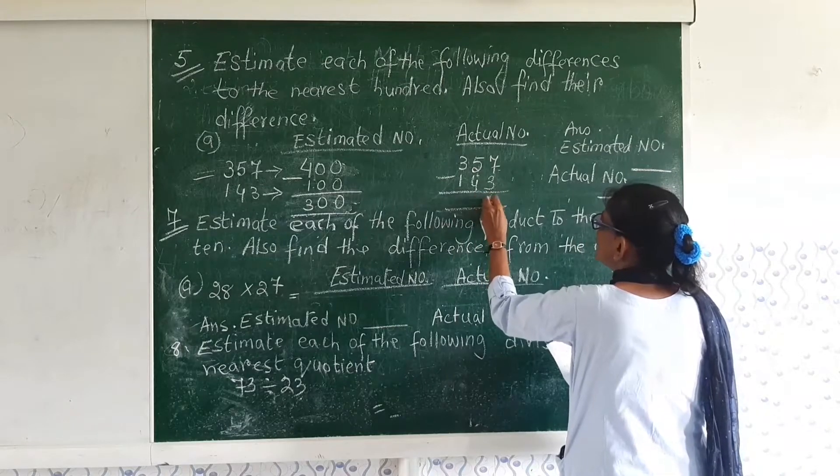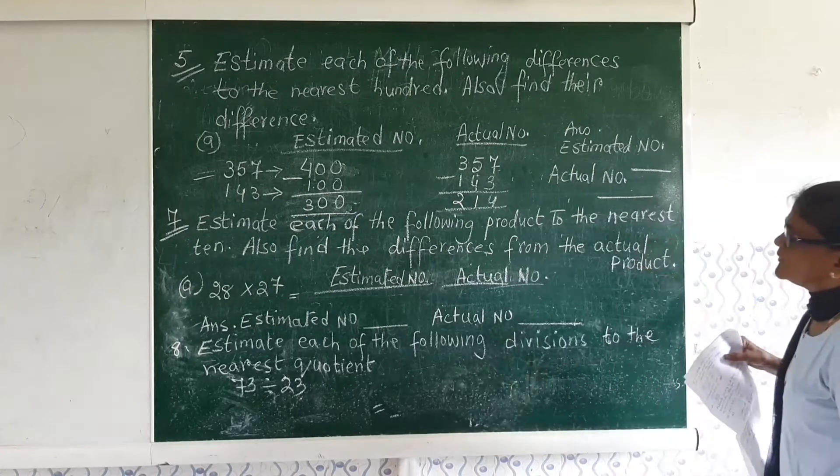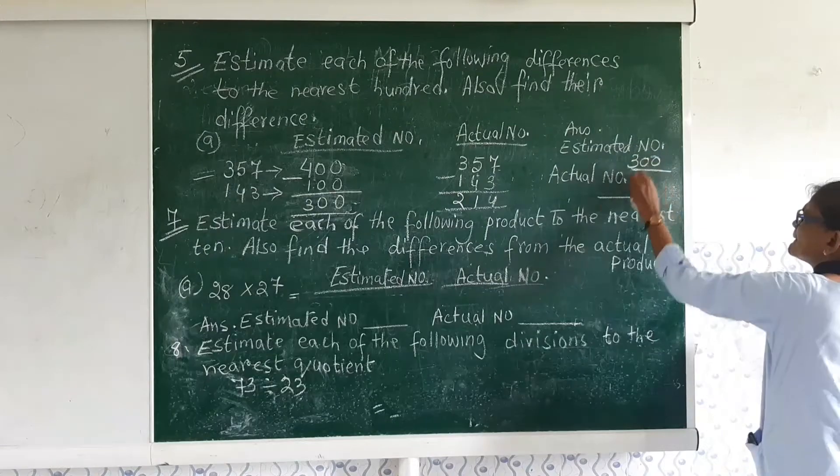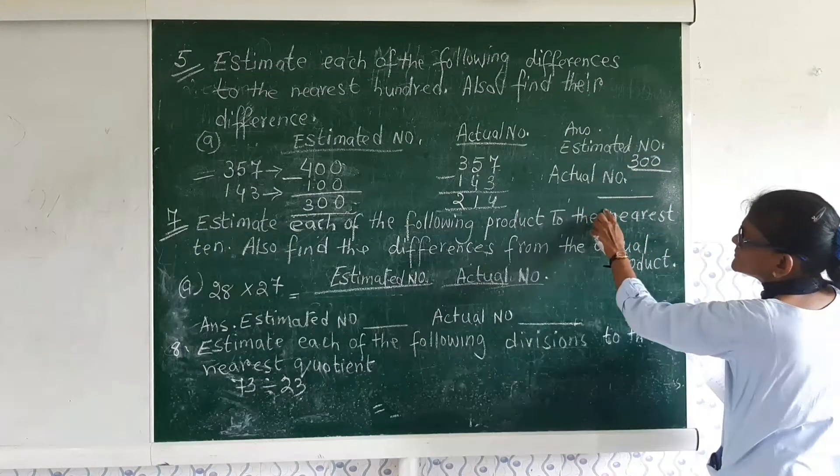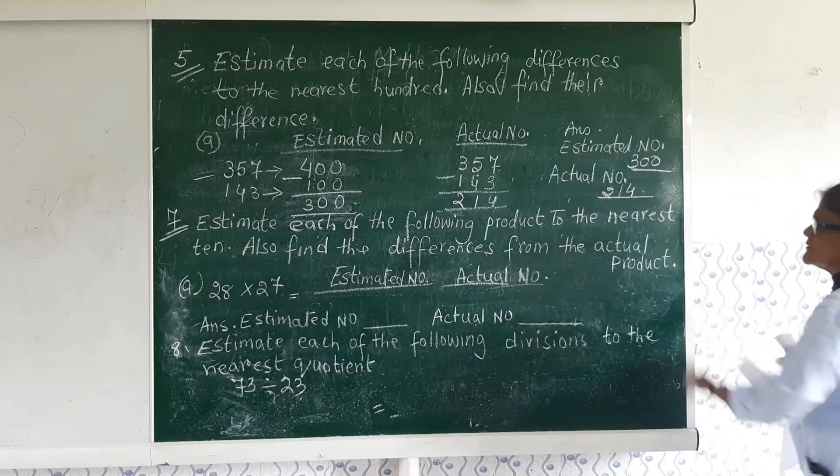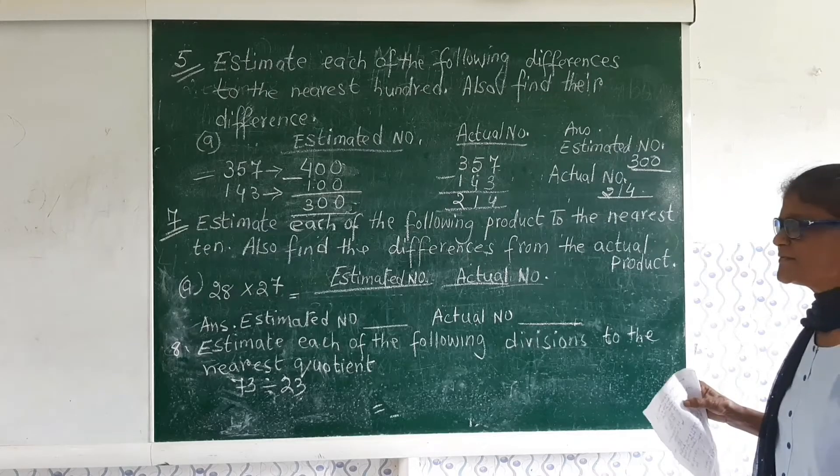Then subtract it. How much do you get? 214. So your estimated number is 300 and your actual number is 214. So this is your answer.